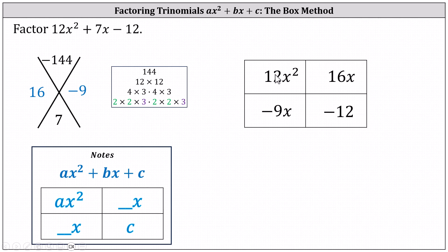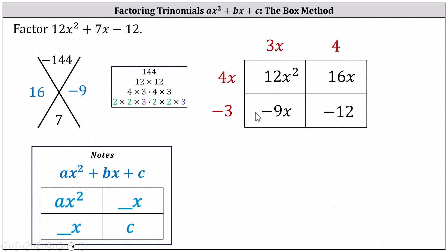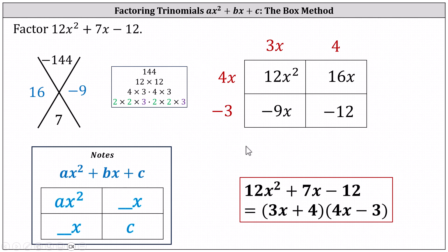And once again, we determine the greatest common factor in each row and each column. In column one, we have 12x squared and negative 9x — the greatest common factor is 3x. In the second column, we have 16x and negative 12 — the greatest common factor is 4. Moving to row one, we have 12x squared and 16x — the greatest common factor is 4x. And for row two, we have negative 9x and negative 12 — the greatest common factor is 3, but because the first term in row two is negative, we use negative 3. This indicates the factors of 12x squared plus 7x minus 12 are 3x plus 4 and 4x minus 3.